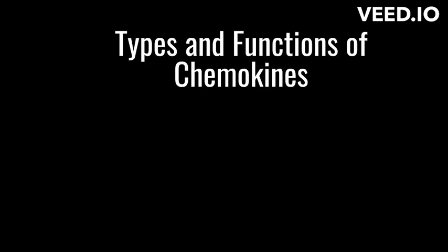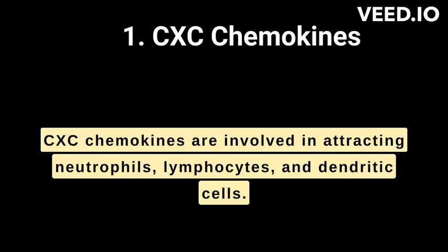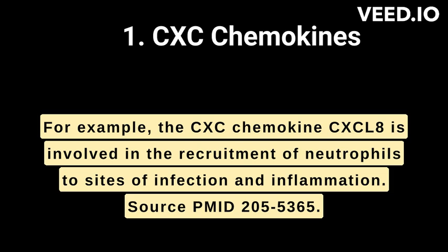Types and functions of chemokines. 1. CXC chemokines. They are involved in a variety of functions, including inflammation, angiogenesis, and hematopoiesis. CXC chemokines are involved in attracting neutrophils, lymphocytes, and dendritic cells. For example, the CXC chemokine CXCL8 is involved in the recruitment of neutrophils to sites of infection and inflammation.